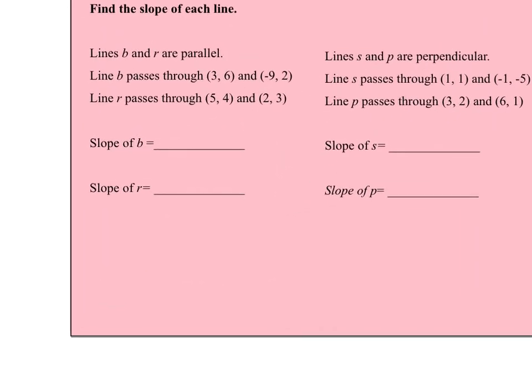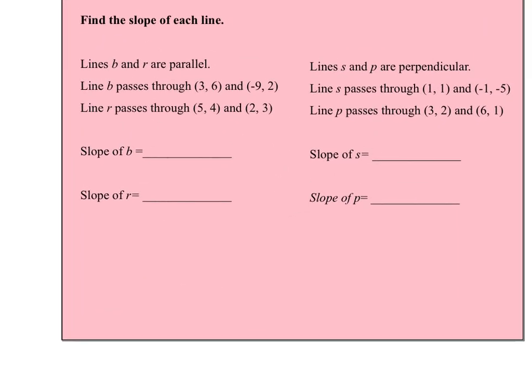So let's look. Lines B and R are parallel. Remember from the previous section, they're going to be equidistant apart, never going to touch, and coplanar. Line B passes through this and this. Line R passes through this and this. Let's look at slope. Slope of B. I will go second y over first y. So that'll be 2 minus 6, then negative 9 minus 3.